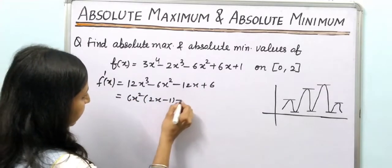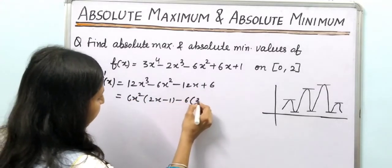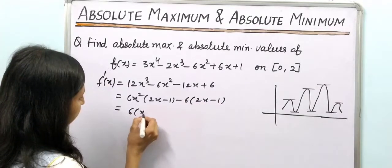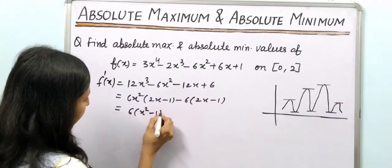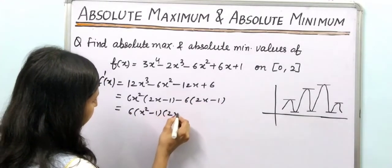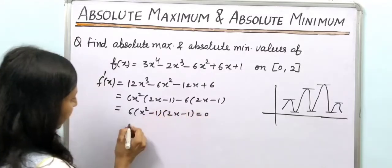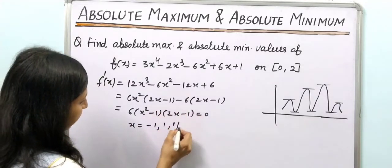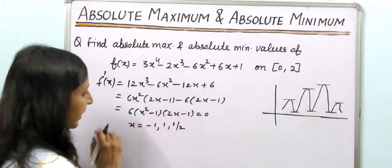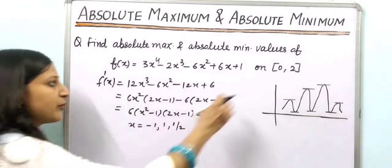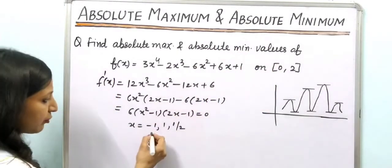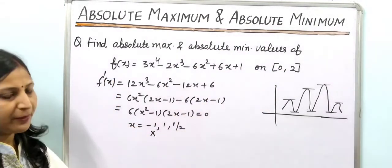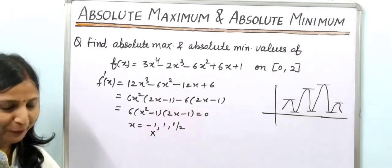Taking 6x² as a common factor gives (2x − 1), and taking 6 common gives another factor of (2x − 1). So we have 6(x² − 1)(2x − 1) = 0. This gives three critical points, but x = −1 is outside the range [0, 2], so we are left with only two critical points: x = 1 and x = 1/2.